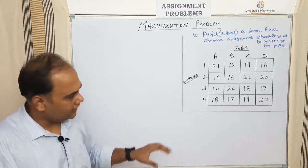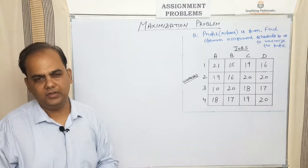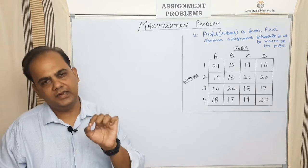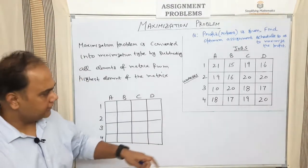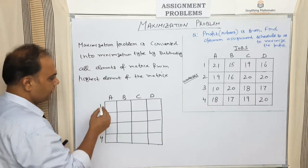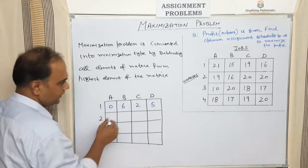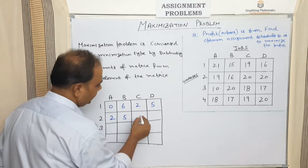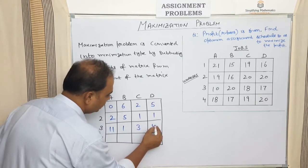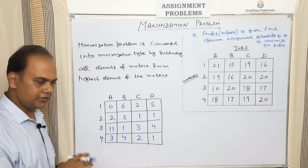Whenever you have a maximization question, you have to convert the maximization problem into minimization type. You convert it by subtracting all the elements of the matrix from the highest element of the matrix. The highest element in this matrix is 21. So: 21−21=0, 21−15=6, then 2, then 5. Second row: 21−19=2, then 5, 1, 1. Third row: 4, 11, 1, 3, 4. Fourth row: 3, 4, 2, 1.